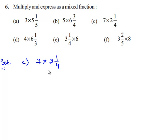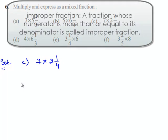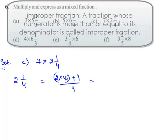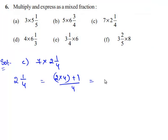So first we need to convert 2 1/4 into its improper form. So 2 1/4 can be written as 2 times 4 plus 1 divided by 4, which is equal to 2 times 4 is 8, and 8 plus 1 is 9. Therefore it is equal to 9/4.